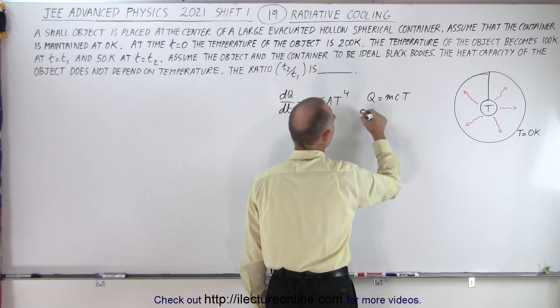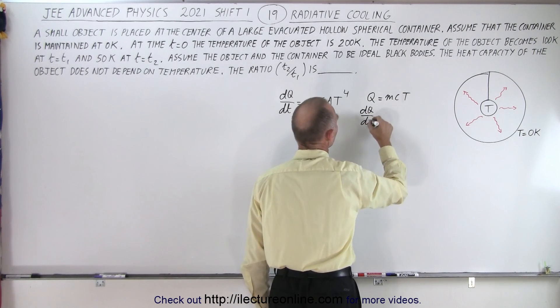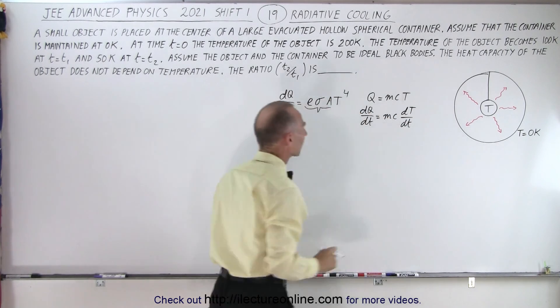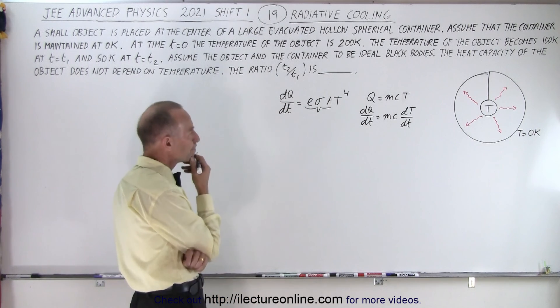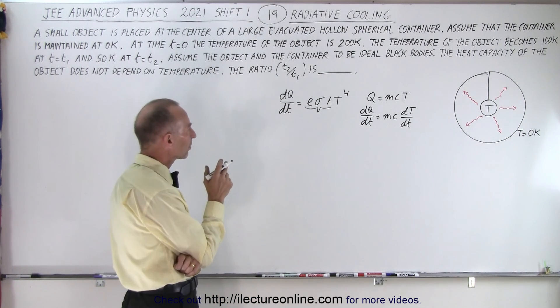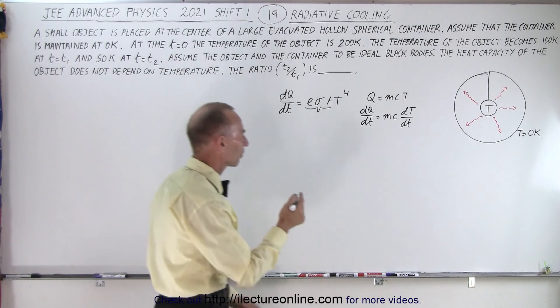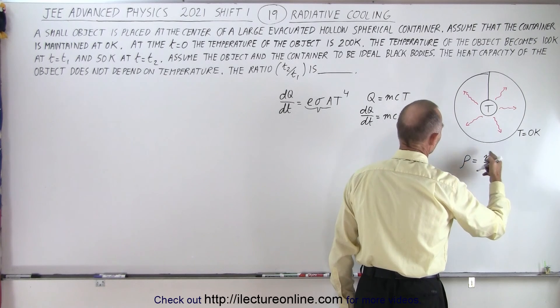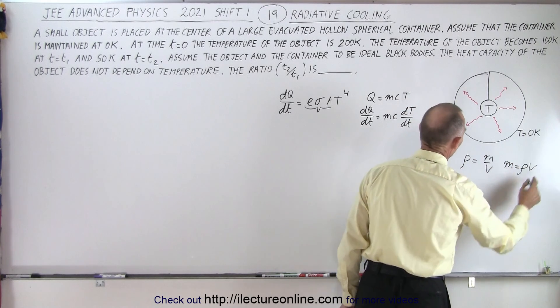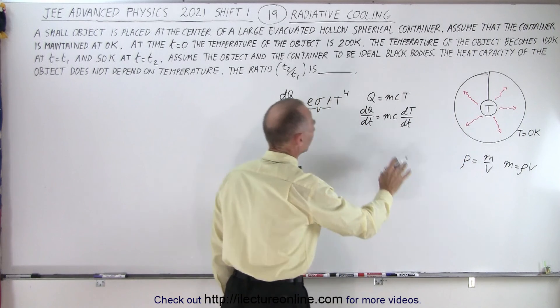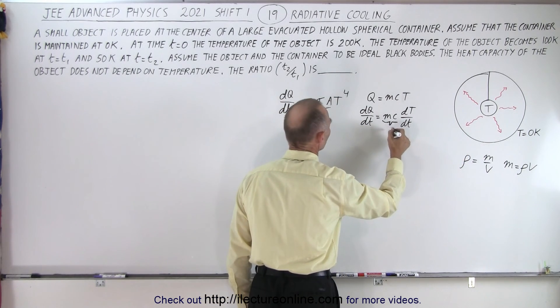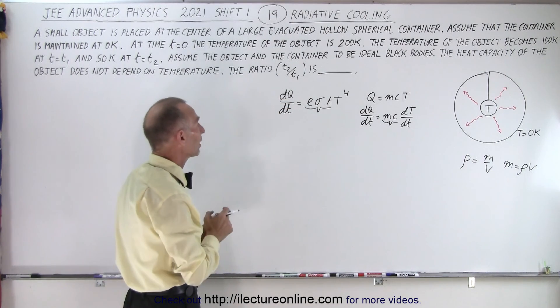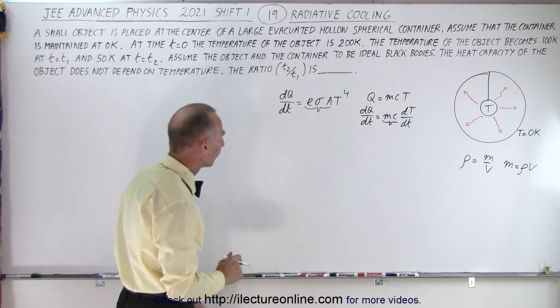So dQ/dt = mc(dT/dt). The mass of an object involves density times volume, but none of that really matters because we can treat mc as simply a constant. This makes the problem faster and easier.